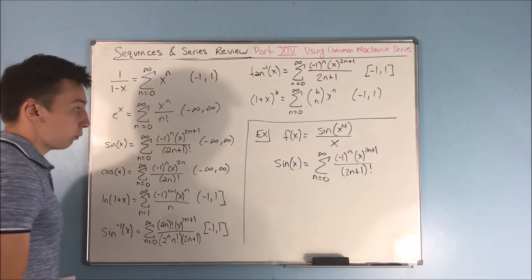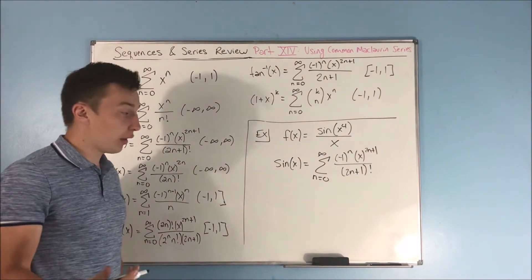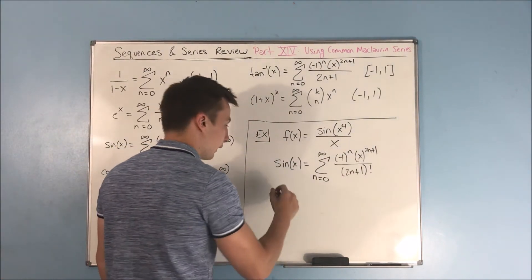to the 2n plus 1 over 2n plus 1 factorial. So, sine of x to the 4th, we're just going to plug in an x to the 4th for this x here.